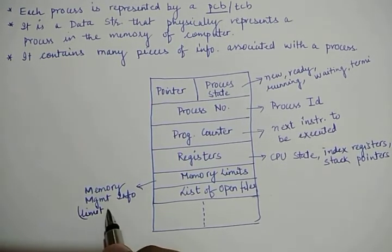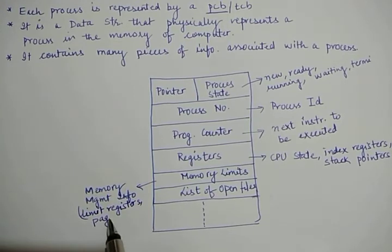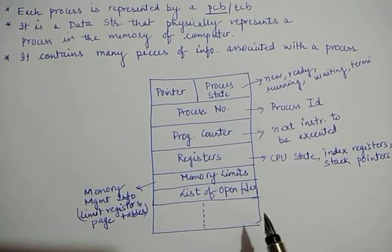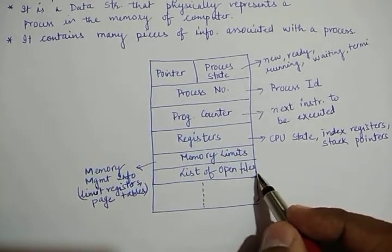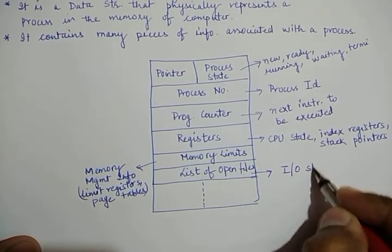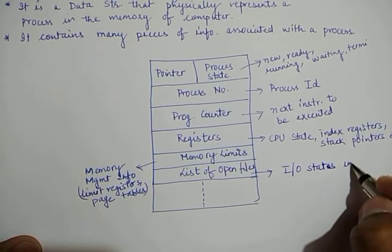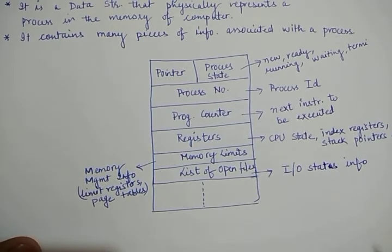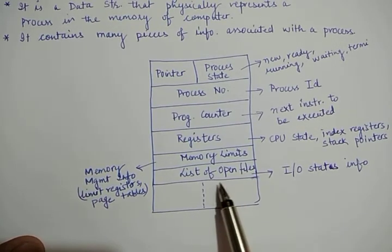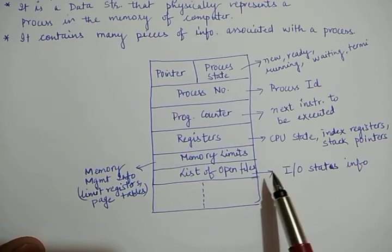The memory limit field generally contains information of limit registers, page tables, etc. The list of open files field represents the I/O status information — that is, what input/output devices a process is currently using, and what input or output files a process is using for its execution. This is denoted by the list of open files information.